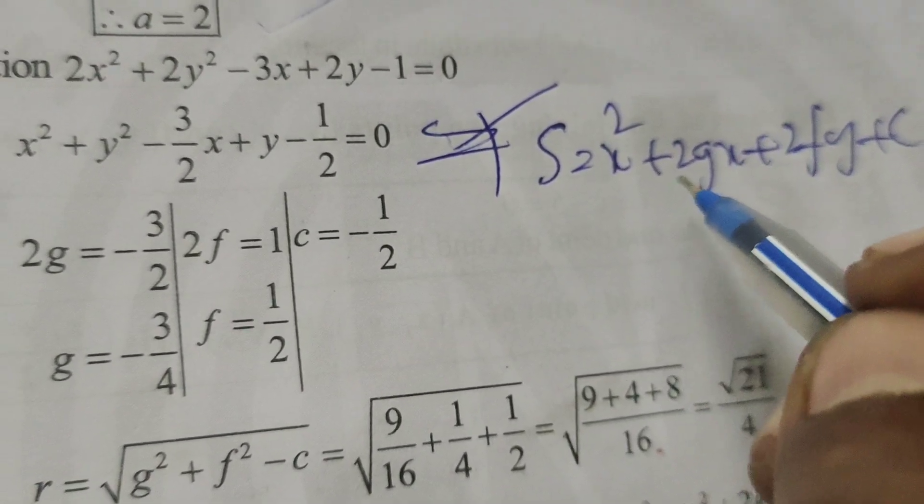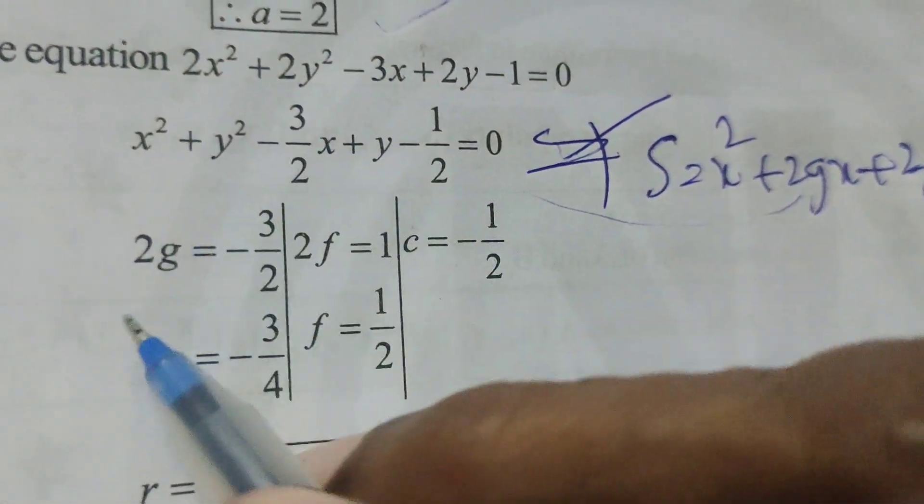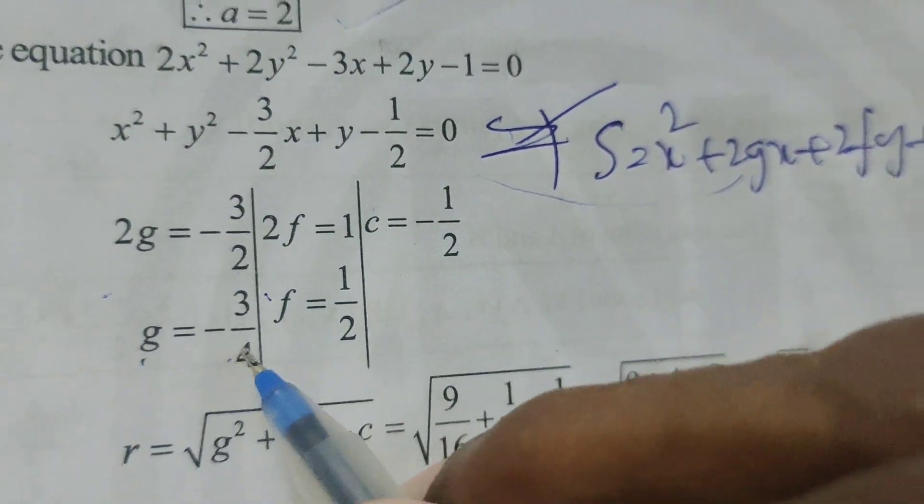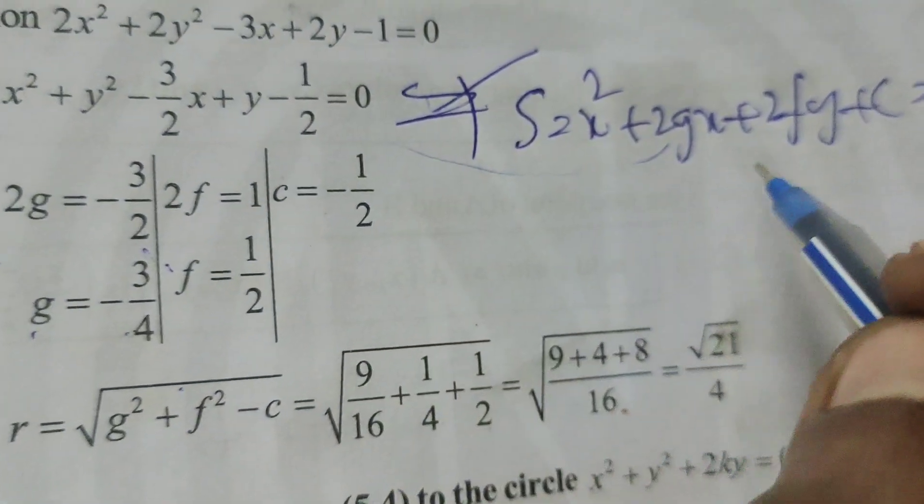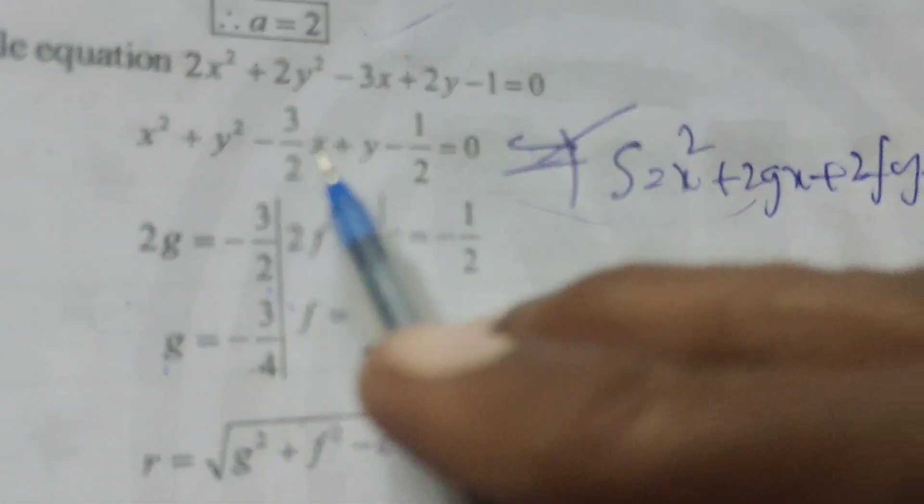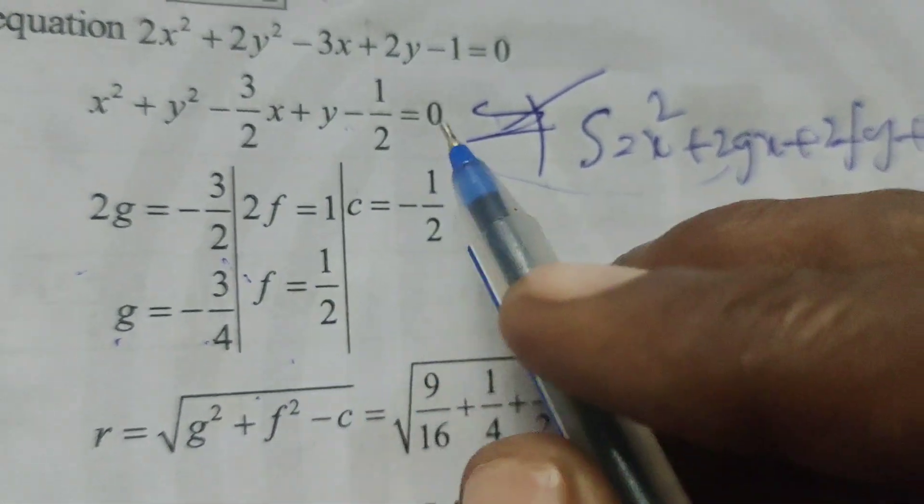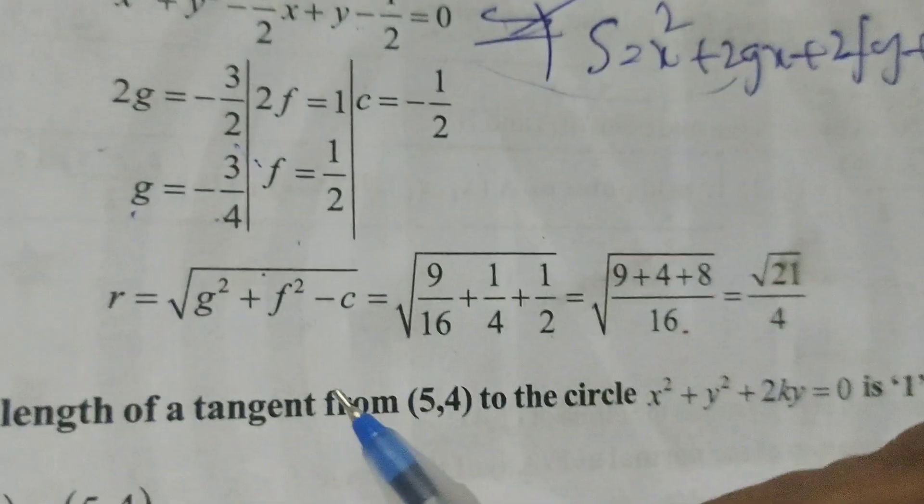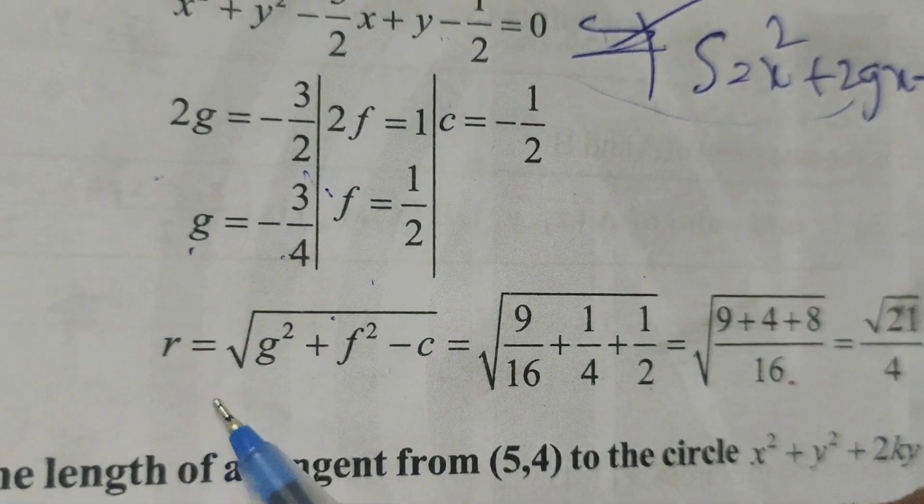Therefore, comparing this, 2g equals to minus 3 by 2, g equals to minus 3 by 4, 2f equals to 1, f equals to 1 by 2, c equals to minus 1 by 2. Now, find out the radius.